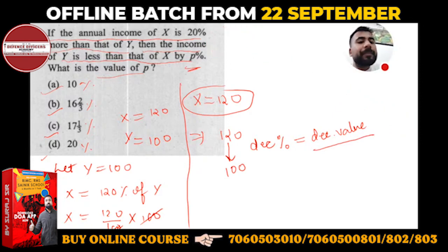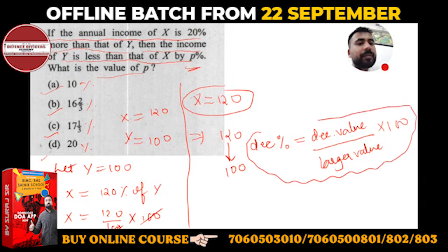In numerator, decreasing hota hai, toh denominator mein larger value. Increasing case mein numerator mein increasing value hoti hai, denominator mein smaller value. So larger value into 100. This is nothing but decreasing percentage.